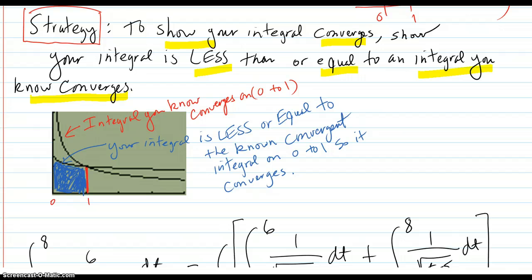It's like on this picture. Here's the integral from 0 to 1. So your integral here is less than the integral you know converges. So that means it's going to converge, not going to go to infinity.